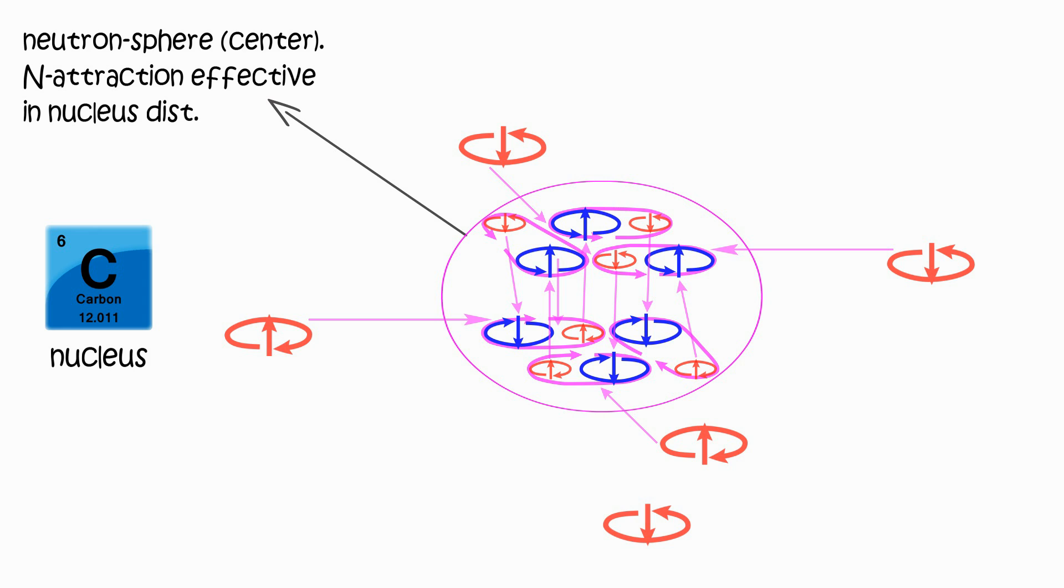So in the nucleus, neutrons form neutron sphere at the center, proton cling at parameters of neutron sphere at different distances, forming the proton sphere.